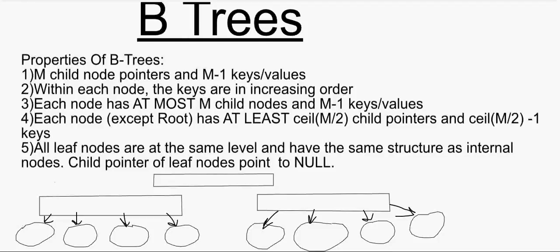Hello guys and welcome to today's video. Today we'll be learning about B trees. B trees are a special type of tree that are used to process databases — that is, blocks of memory — which are generally used for various processes in a computer and stored in memory as nodes. So, simply put, B trees are a special type of tree.